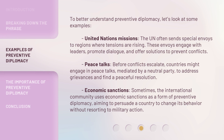To better understand preventive diplomacy, let's look at some examples. United Nations Missions: the UN often sends special envoys to regions where tensions are rising. These envoys engage with leaders, promote dialogue, and offer solutions to prevent conflicts. Peace talks: before conflicts escalate, countries might engage in peace talks, mediated by a neutral party, to address grievances and find a peaceful resolution. Economic sanctions: sometimes the international community uses economic sanctions as a form of preventive diplomacy, aiming to persuade a country to change its behavior without resorting to military action.